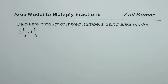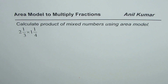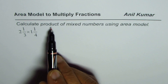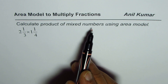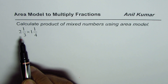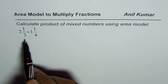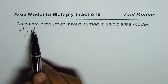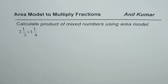I'm Anil Kumar and we'll explore the area model to find the product of mixed numbers. The question here is to calculate the product of mixed numbers using the area model. We need to multiply 2 1/3 by 1 1/4.